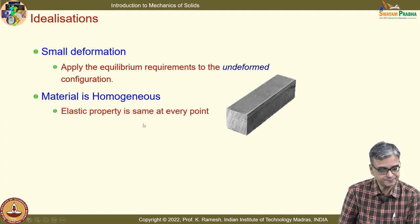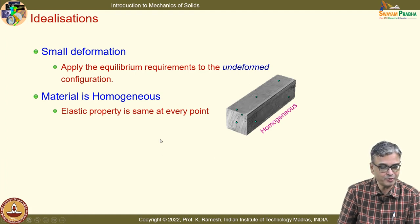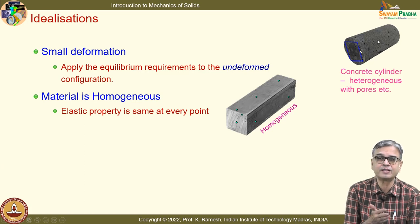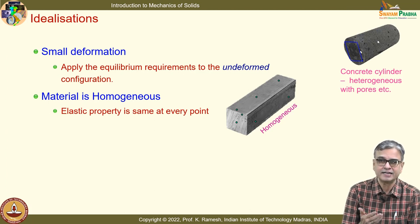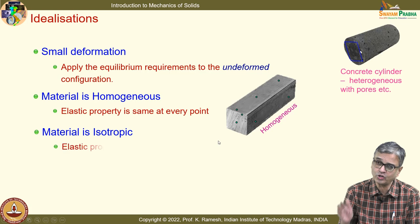The material is homogeneous — elastic property is the same at every point. You understand this with a contrasting example: a concrete cylinder is heterogeneous. If you see how they mix concrete, they have aggregates, cement, and sand — it cannot be homogeneous. Because we find it difficult to handle heterogeneous material, we idealize it as homogeneous. With modern experimental analysis, rapid prototyping, and three-dimensional photoelastic analysis, you can analyze even heterogeneous material and come out with better material models.